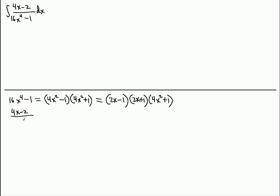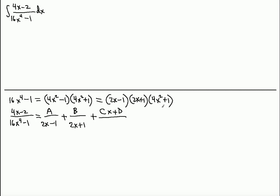Now we can rewrite this fraction and decompose it as A divided by (2x - 1), plus B divided by (2x + 1), plus (Cx + D) divided by (4x² + 1). Because it's a quadratic prime factor, we have to have two constants, and the first constant multiplies the x.